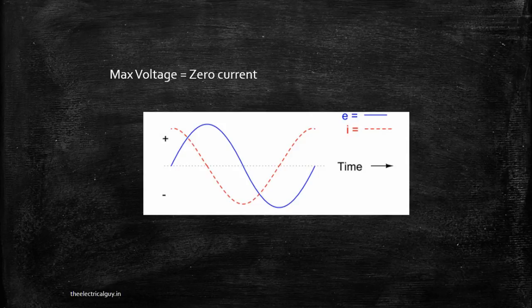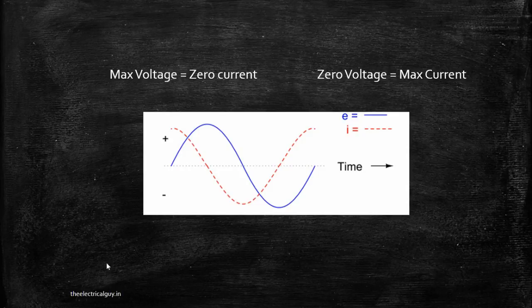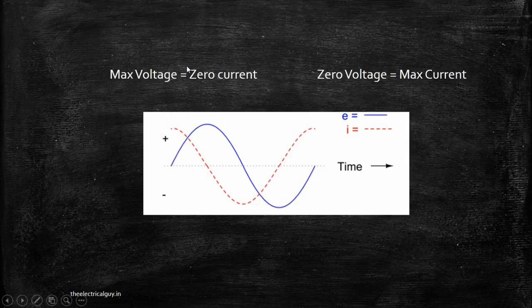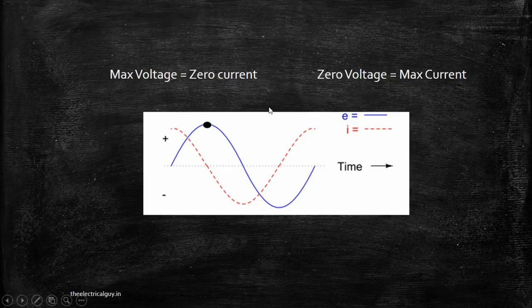When the voltage gets to zero, the capacitor tries to keep the voltage constant by increasing the current to its maximum level — so zero voltage corresponds to maximum current. As you can see at the start, the voltage is zero, and to keep the voltage constant, the capacitor increases current to its maximum. In the second case, when voltage is maximum, the capacitor reduces the current to zero.